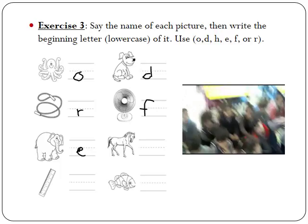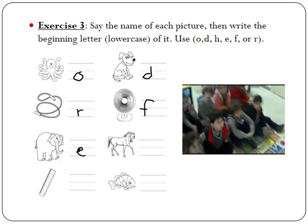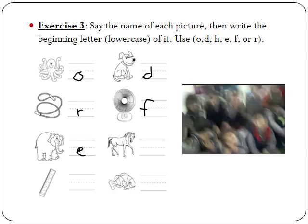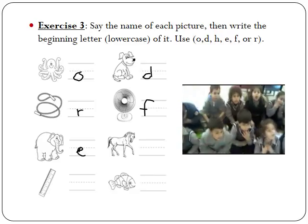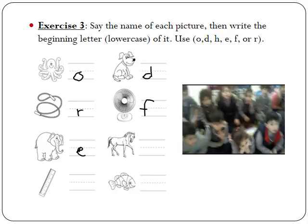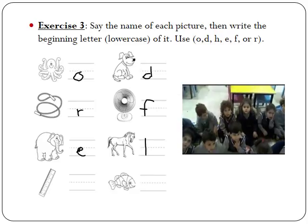Okay, what about this animal? This is a horse. Can you make the sound it begins with? What letter should I write? H.